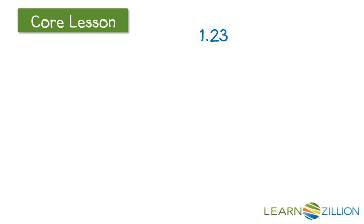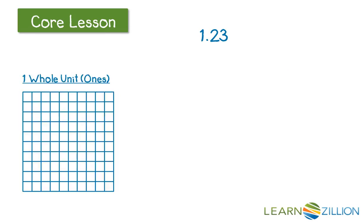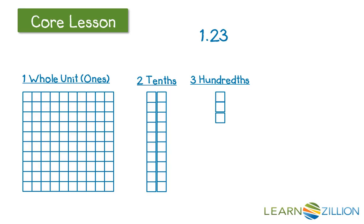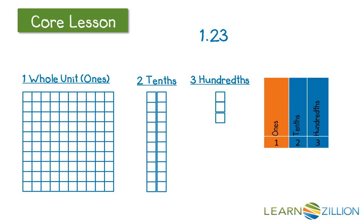Here's an example. 1 and 23 hundredths would be shown like this: 1 whole unit, 2 tenths, and 3 hundredths. And you can see on our chart that represents 1 and 23 hundredths.